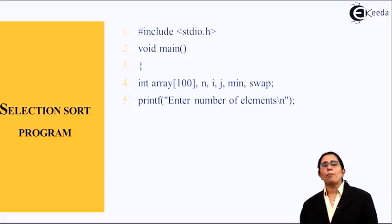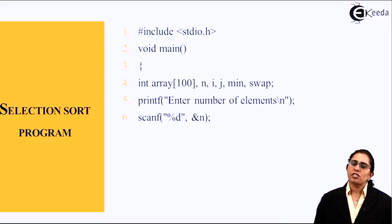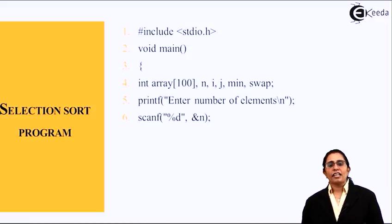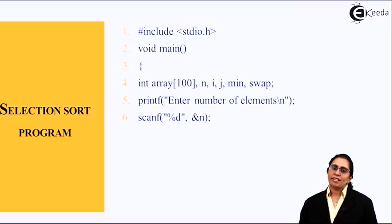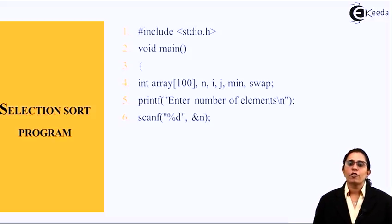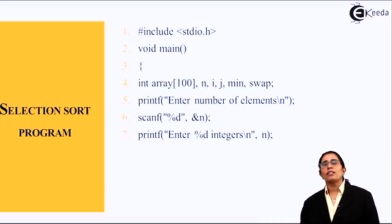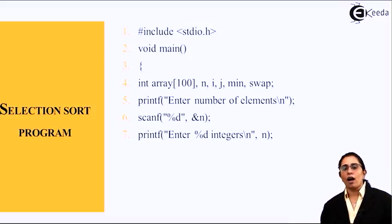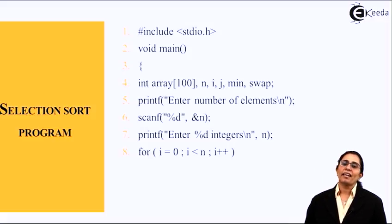Next is a printf statement prompting you to enter the elements. A scanf reads n, telling you how many numbers to sort. In our example, we consider n as 5. We then input the values. The for loop is: for i equals 0, i less than n, i plus plus. Since we start from 0 and n is 5, the loop runs from index 0 to 4. If starting from 1, the condition would be i less than or equal to n.